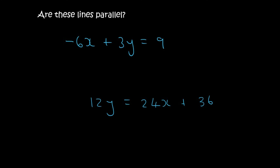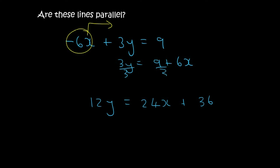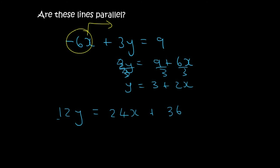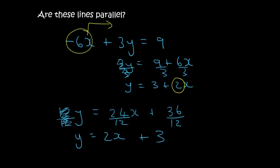For the top line we first move the 6x over, giving us 3y equals 9 plus 6x, then divide everything by 3, so y equals 3 plus 2x. The bottom equation is nearly in standard form — we just divide everything by 12 to get y by itself: 24 divided by 12 is 2, and 36 divided by 12 is 3. Now we can compare: in the top equation the number in front of x is 2, and in the bottom equation it is also 2. So these two lines are parallel — they have the same gradient.